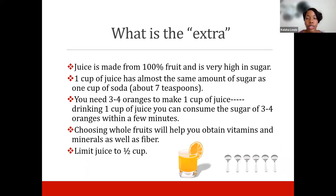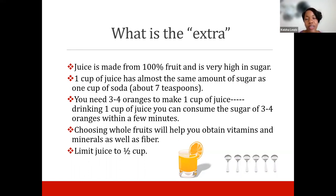What actually are the extras in your diet? Juice and soda are extras. Juice is made of 100% fruit but has very high sugar content. One cup of juice has almost the same amount of sugar as one cup of soda — about seven teaspoons. It takes three to four oranges to make one cup of juice, so drinking it means you consume the sugar of three to four oranges within minutes. I'd much rather you have a piece of fruit and water. If you must have juice, limit it to a half cup.